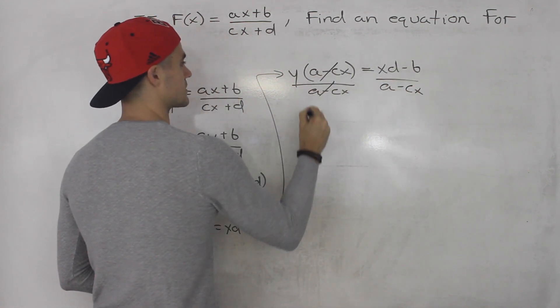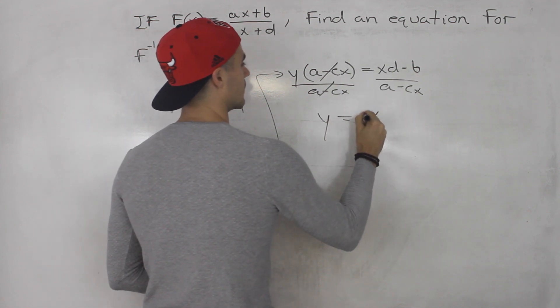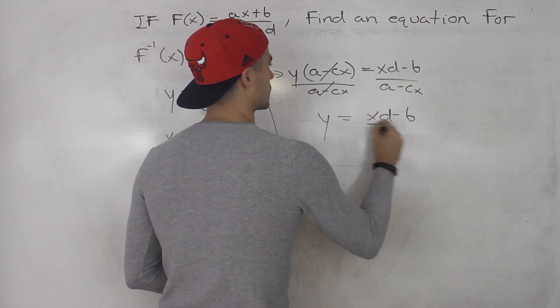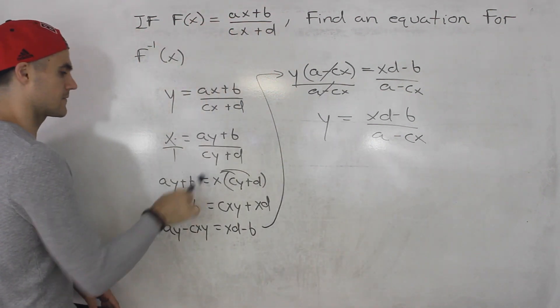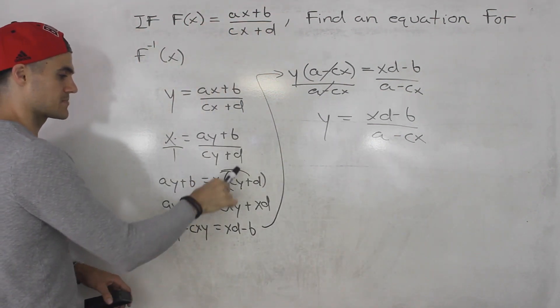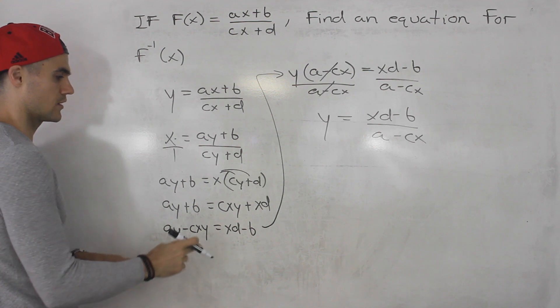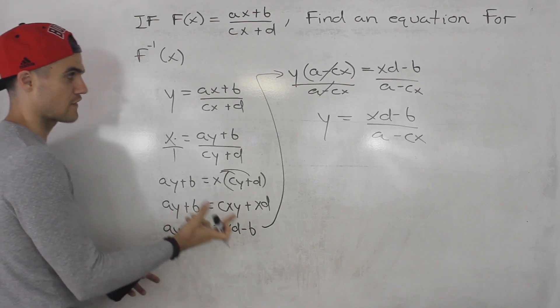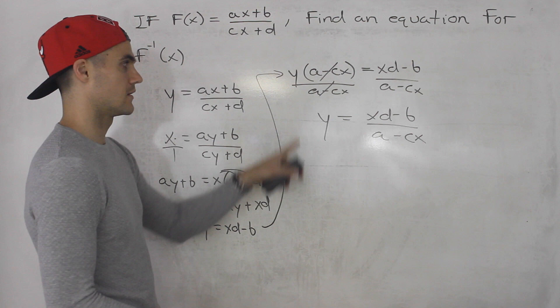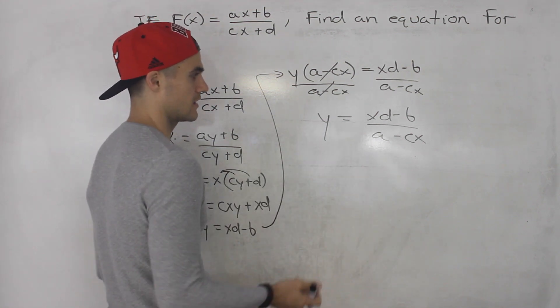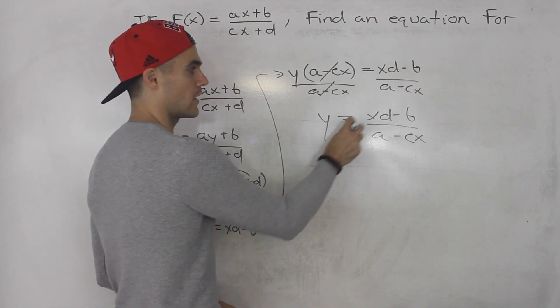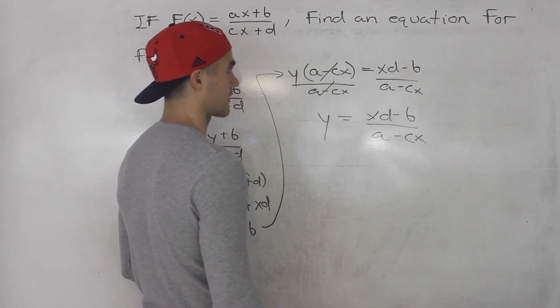All right so basically what we did was we cross multiplied here and then you want to expand and then you want to get all of the expressions with y on one side so you could factor it out as just one variable. And then divide both sides by that bracket and that there is your inverse. We isolate it for the y. Notice that everything is in terms of x.